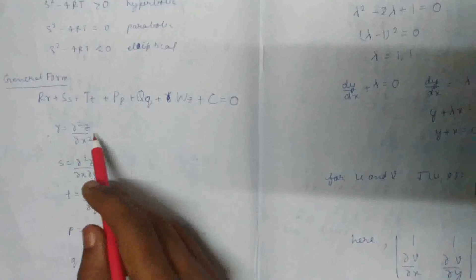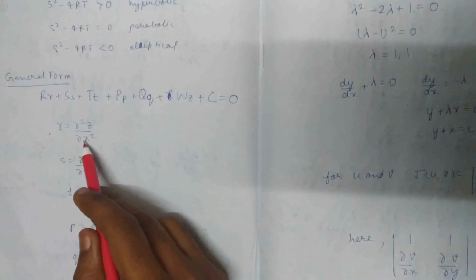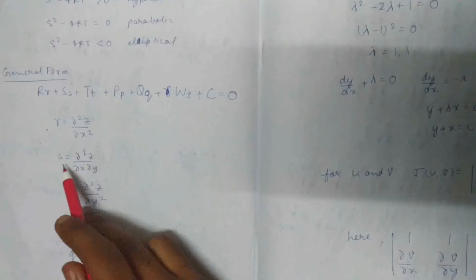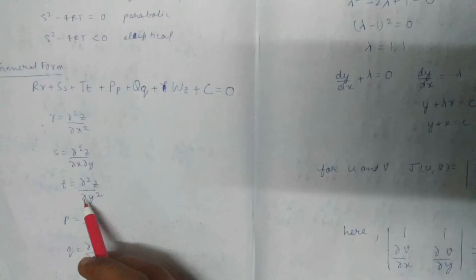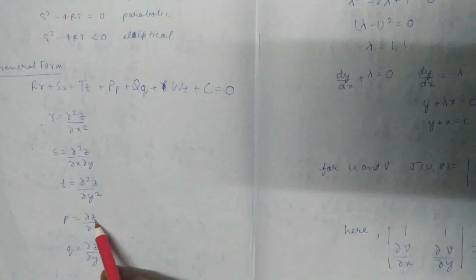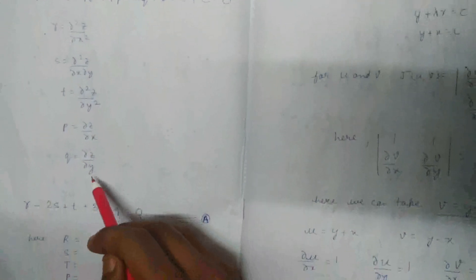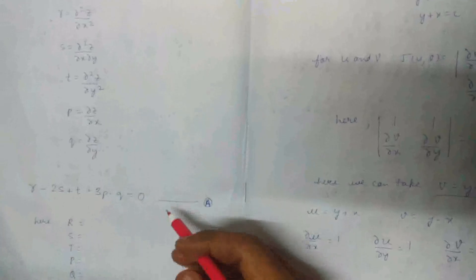Here, small r is d²z/dx², S is d²z/dx dy, T is d²z/dy², P is dz/dx, and Q is dz/dy. These are generally taken in all the forms.